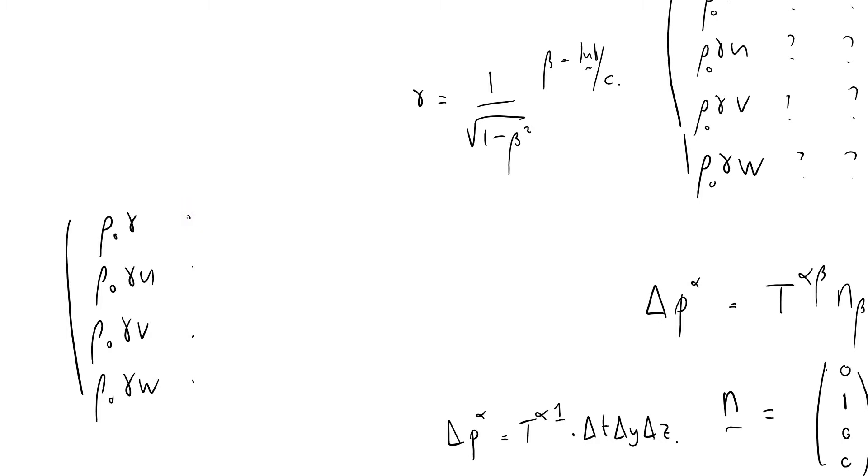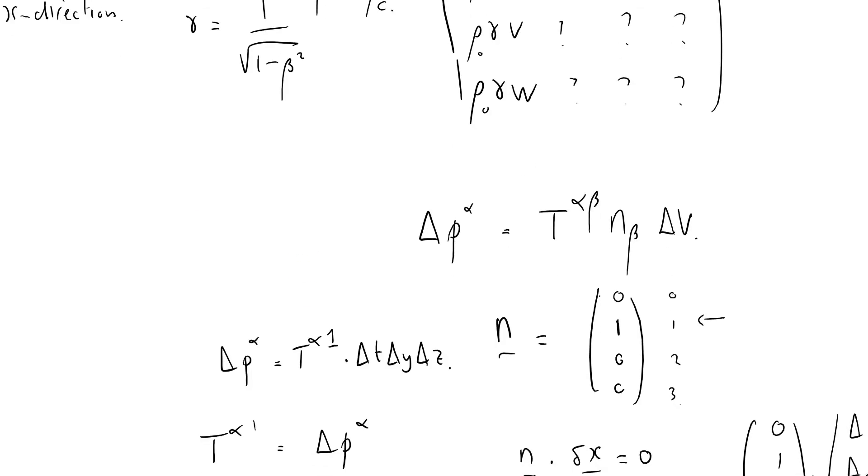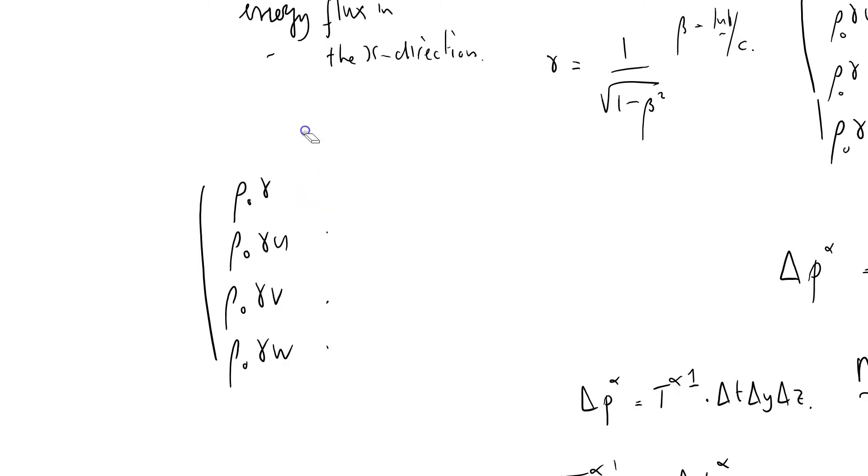And now I can start to fill in these components here. This one here is the flux, the energy flux, energy flux in the x direction. Why is it the x direction? It's the x direction because I chose the x component of this normal vector here. And we know what that is. We can say what the energy flux is, that's just rho zero gamma u. Well that's great.